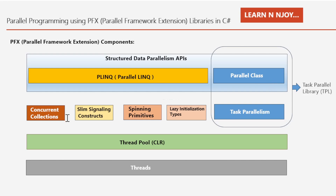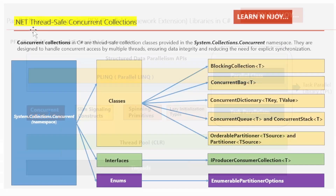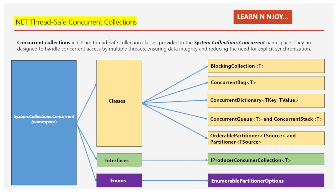Today our focus shifts to concurrent collections — .NET thread-safe concurrent collections. Concurrent collections in C# are thread-safe collection classes provided in the System.Collections.Concurrent namespace. They are designed to handle concurrent access by multiple threads, ensuring data integrity and reducing the need for explicit synchronization.